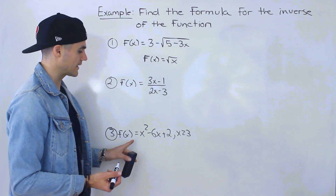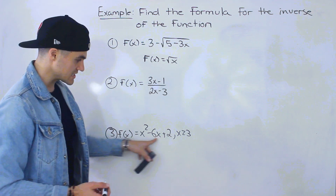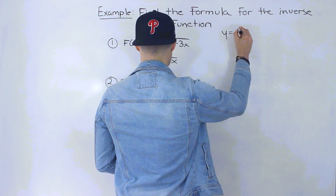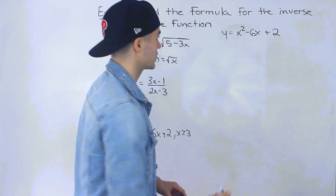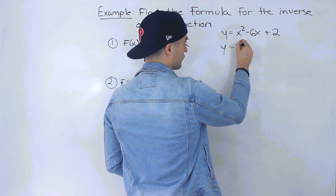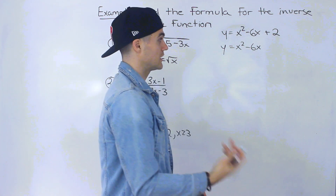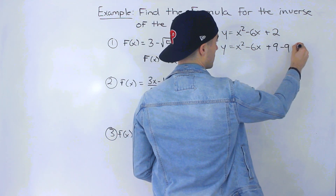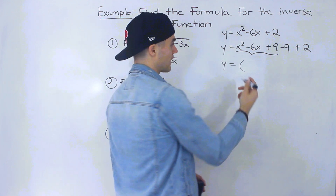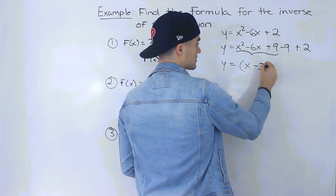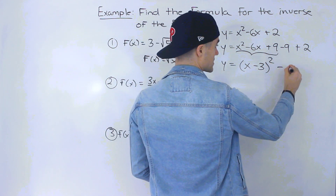Moving on to number 3: f(x) = x²-6x+2, with the domain restricted to x ≥ 3. This is a parabola, and when finding the inverse of a parabola it must be in vertex form first. So we complete the square. There's nothing to factor out in front of x², which is nice. Take half of -6, which is -3, square it to get 9. Add and subtract 9: x²-6x+9-9+2. The perfect square trinomial factors as (x-3)², and -9+2 = -7. So f(x) = (x-3)² - 7.